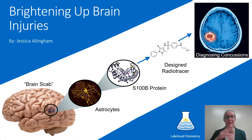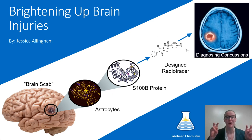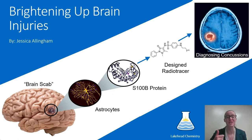I want to make this brain scab visible. So I looked at proteins associated with astrocytes, the cells that make up this scab, one of which is S100B, a protein associated with astrocytes that sheath blood vessels and is involved in inflammatory processes. When an individual receives a concussion, the concentration and expression of S100B are significantly increased in the area of the injury. It is that increase in concentration that I want to image.